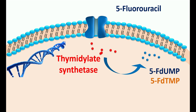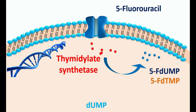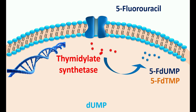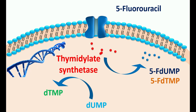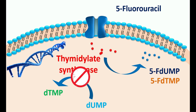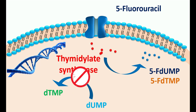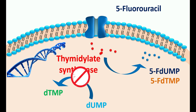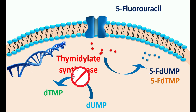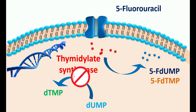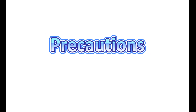These two metabolites can block the activity of thymidylate synthetase. This enzyme is actually responsible for conversion of dUMP (deoxyuridine monophosphate) into dTMP (deoxythymidine monophosphate). This step is blocked by these false metabolites, leading to inhibition of DNA synthesis as well as RNA synthesis. In this way, 5-fluorouracil can inhibit cell proliferation and reduce cancer cell propagation.